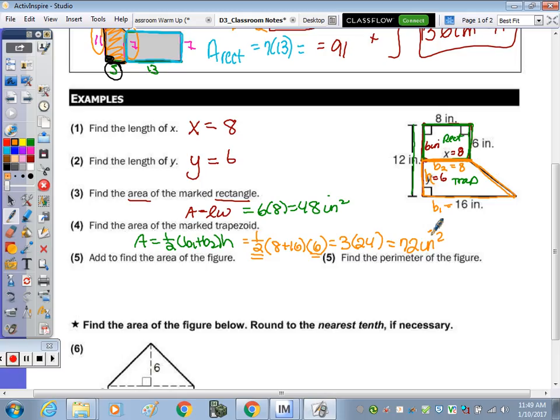Find the area of the figure, the total area. We would take the area of the rectangle and add it to area of the trapezoid. So 48 plus 72 is 120 square inches.